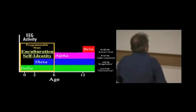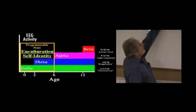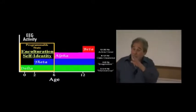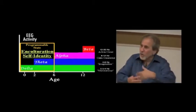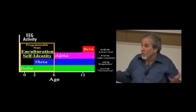From two until six, the brain activity ramps up so its predominant state is theta. Theta is imagination. A child between two and six lives in mixing the world of imagination and the real world.